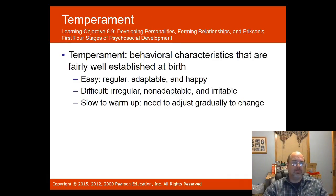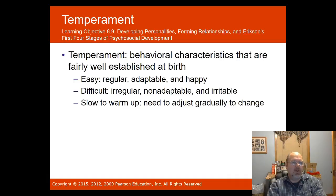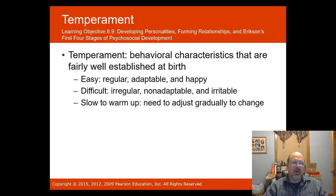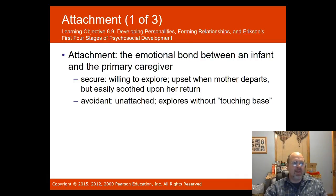Temperament refers to behavioral characteristics that are fairly well established at birth. You may have a baby with an easy temperament — regular, adaptable, and happy. Or a difficult temperament — irregular, non-adaptable, and irritable. Some babies are slow to warm up, meaning they need to adjust gradually to change.